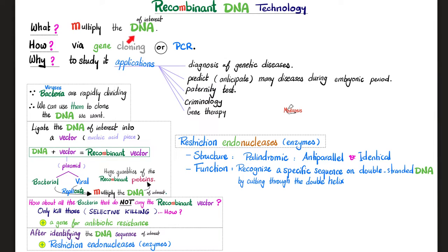Ligate the DNA of interest into a vector. Who's the vector? The plasmid of a bacteria or a virus. This vector is a nucleic acid piece. Add to that the DNA of interest and DNA plus vector equals recombinant vector. Nucleic acids contain genes. The bacteria and viral plasmids will replicate, and those genes will code for recombinant proteins in huge abundance. Not all bacteria are going to carry the recombinant vector, so we destroy the ones that don't by adding a gene for antibiotic resistance. The only bacteria that survive are those carrying the recombinant vector.